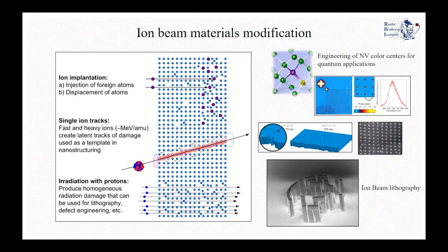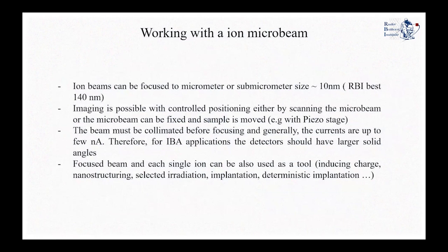To do most of these applications, one needs an ion microbeam. These microbeams can be focused to micrometer size or even sub-micrometer size. One of the best systems, which is in Singapore, can achieve a 10 nanometer beam spot. Here in Roger Boscovich, we have achieved up to 140 nanometers beam spot. To make imaging possible, this is done by controlling the positioning either of the beam or the sample — by scanning the beam or the sample we can obtain maps of elements depending on what technique we're applying.